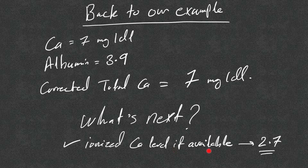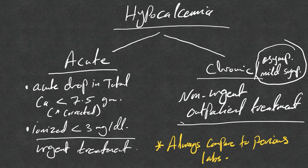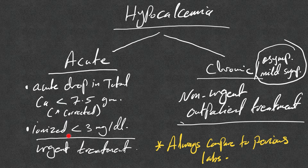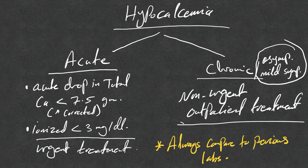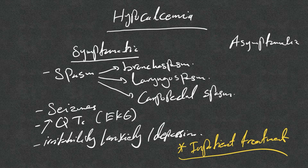Hypocalcemia can be acute or chronic. Acute is defined as a drop in total calcium to less than 7.5 mg per deciliter (corrected for albumin) or less than 3 mg per deciliter in ionized calcium — these patients need urgent inpatient treatment. Compare to a baseline calcium level; if there is no baseline and the patient has no symptoms suggesting hypocalcemia, consider it chronic. Chronic patients are usually asymptomatic or have mild, non-urgent symptoms requiring outpatient treatment.